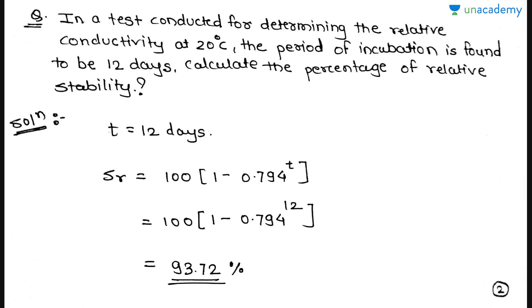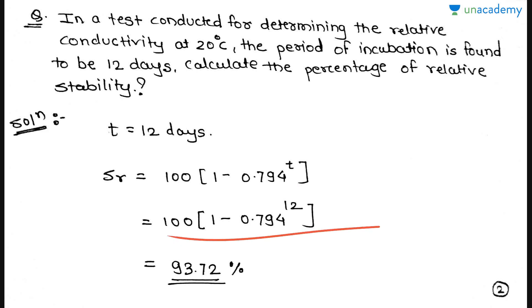Let's see an example. The question is: in a test conducted for determining relative stability at 20°C, the period of incubation is found to be 12 days. Calculate the percentage relative stability. Given t = 12 days, applying the formula: S_R = 100 × (1 − 0.794^12). Putting the value, we get the relative stability as 93.72%.